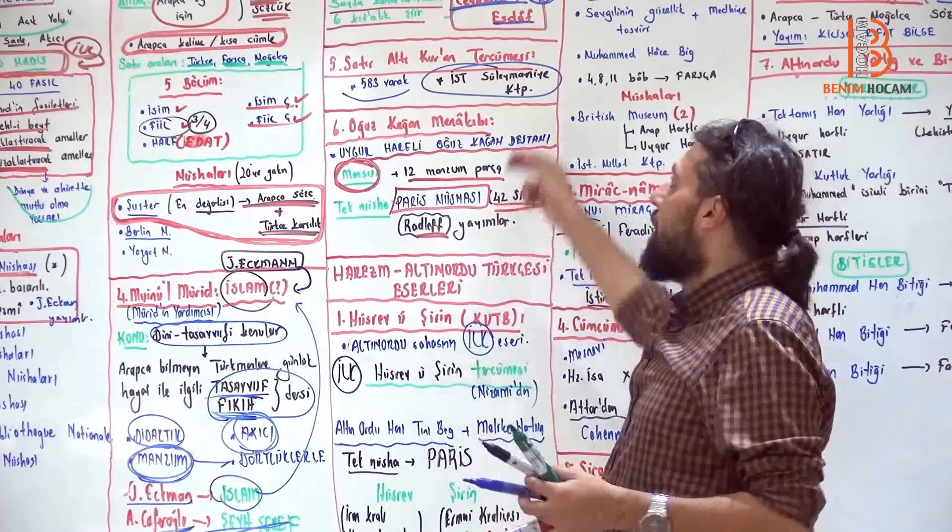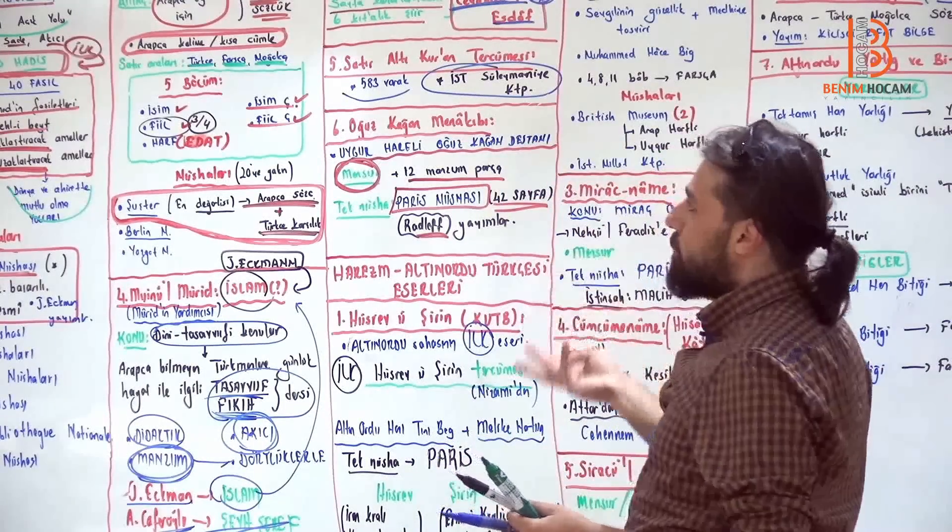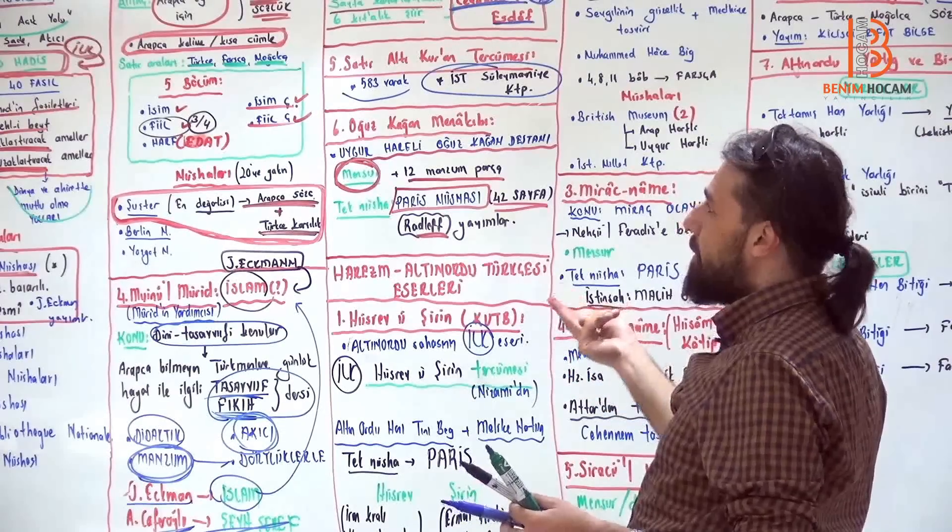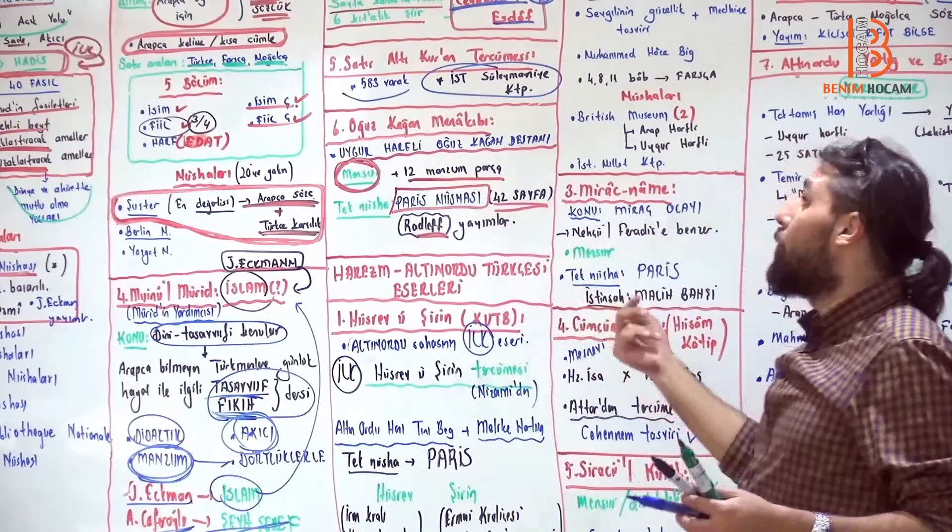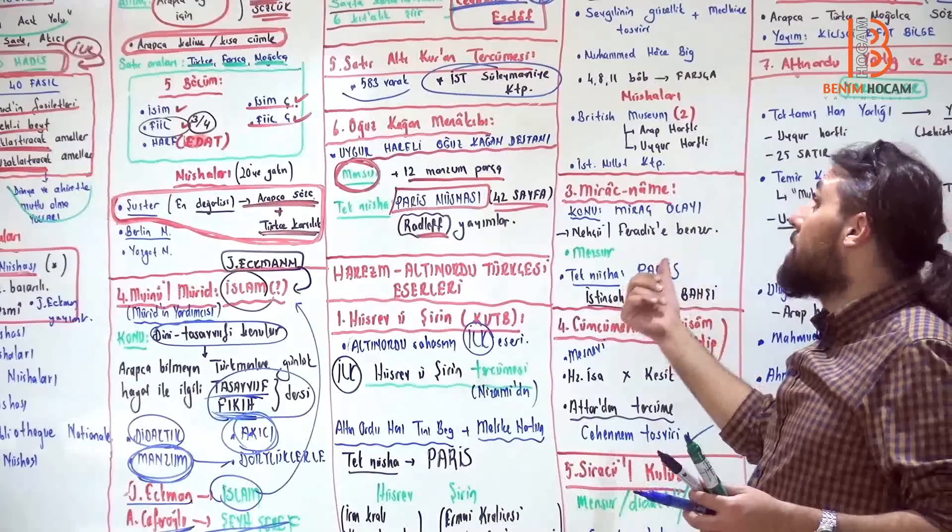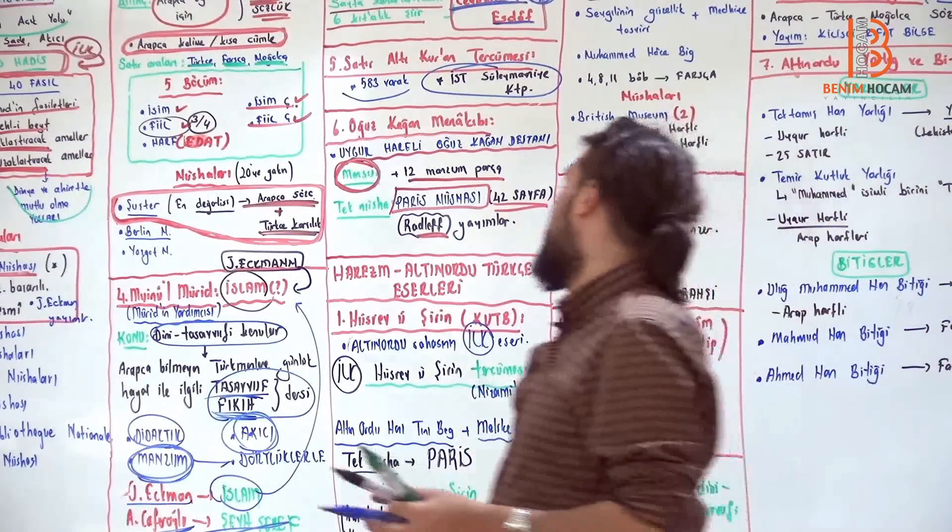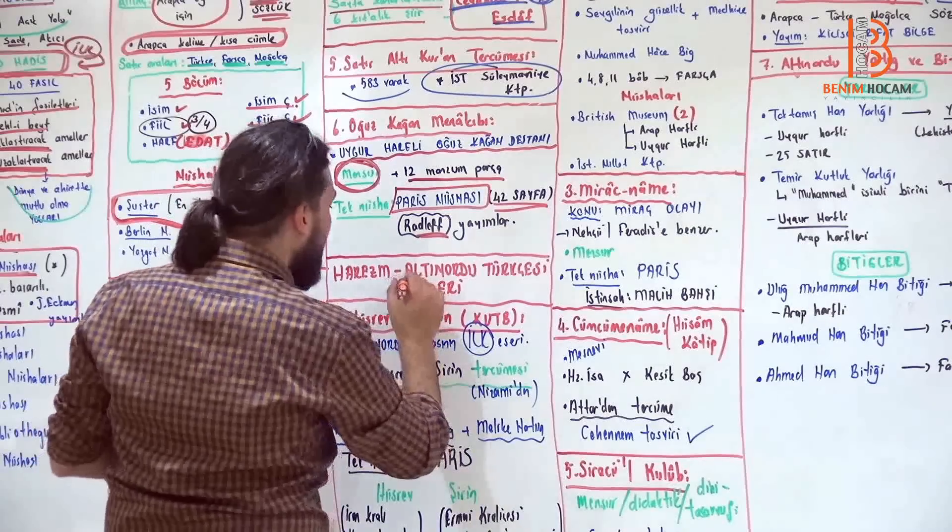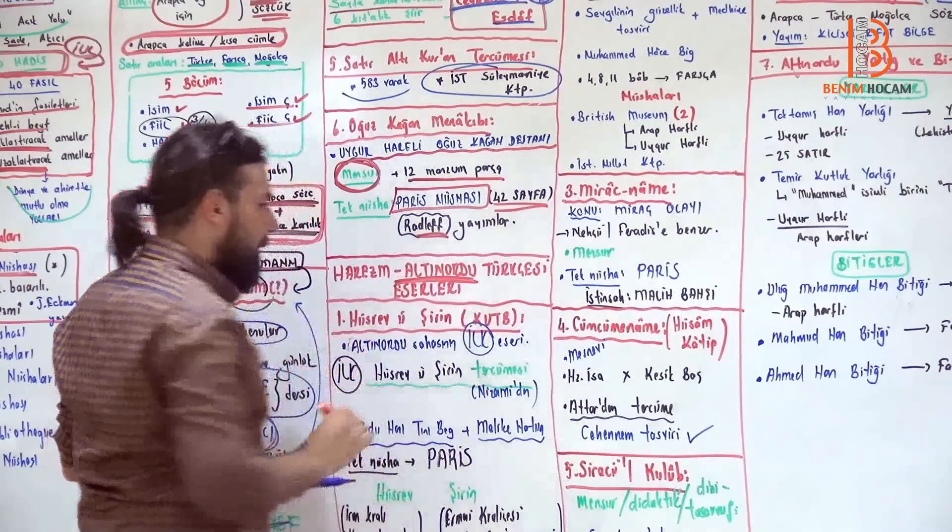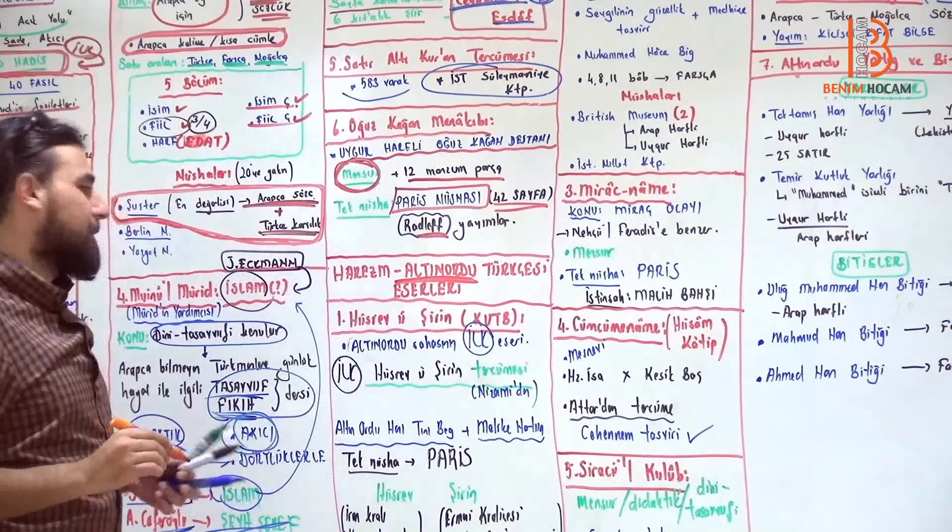Şimdi Harezm döneminde bunlar. Demek ki 4 büyük eser, Kısa Süleym bir Rabguzi, Neçül Feradis Kerderli Mahmut, Mukattimet-ül Edep Zemahşeri, Muinil Mürit İslam 2 tane deyik. Bakın satır altı Kur'an tercümeleri ve Oğuz Kağan Menakıbı, Uygur harfli Oğuz Kağan destanı. Şimdi gel, Altınordu Devleti zamanında olan Harezm Altınordu Türkçesi eserdir.